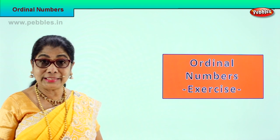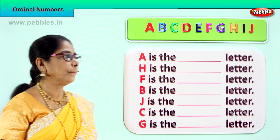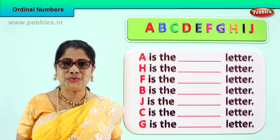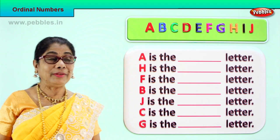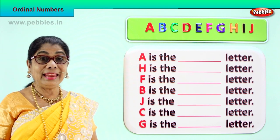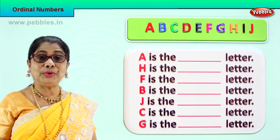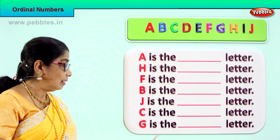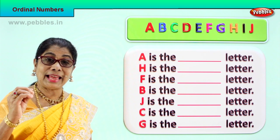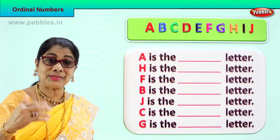Let's look at our first exercise in ordinal numbers. We have some letters here. Look at the first green box. We have all alphabets from A to J arranged. Each letter has a place. Now we are going to look at each of these alphabet letters and find what place each one takes — is it the first, or the sixth, or the tenth?